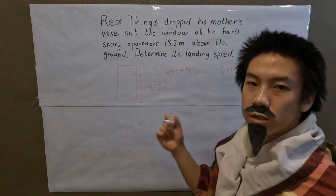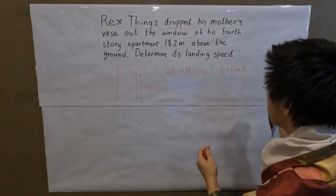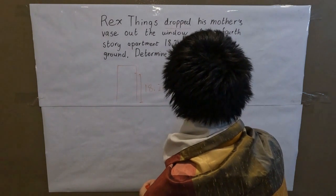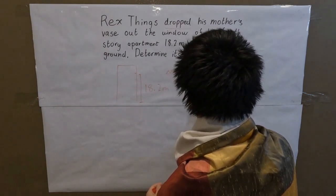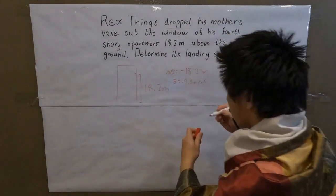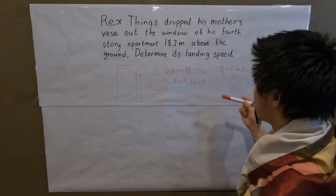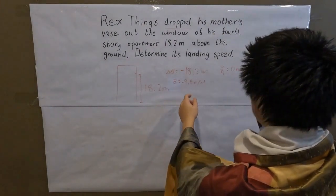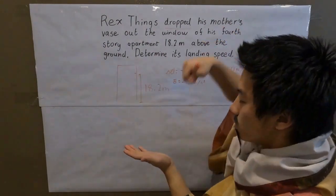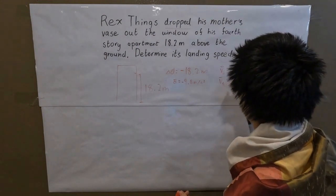Anyone studying physics must know that any object falling towards the center of the earth is accelerating at 9.8 meters per second squared — and don't forget the negative: it's negative 9.8 meters per second squared, because it's going down. Now, the question wants us to find the landing speed — that is, the speed at the moment it hits the ground — so it's the final velocity, Vf, that we want to find.